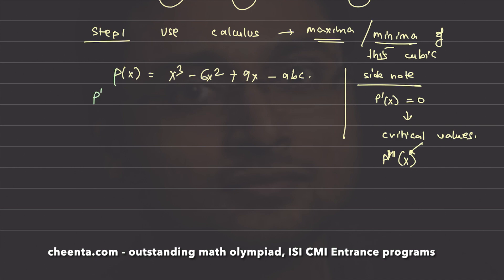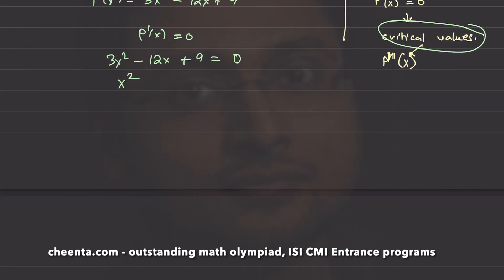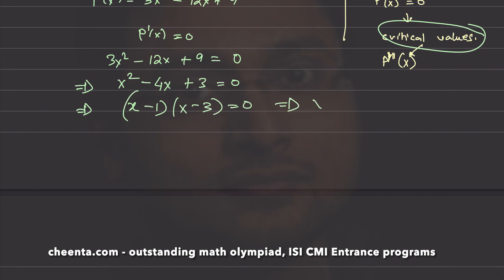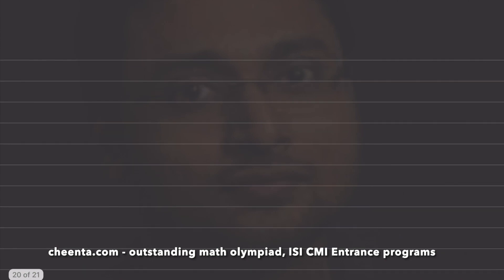So p'(x) = 3x² − 12x + 9. Set this first derivative equal to 0 to find the critical values: 3x² − 12x + 9 = 0, or x² − 4x + 3 = 0, which means (x−1)(x−3) = 0, so x = 1 or x = 3. These are the two critical values.